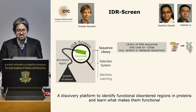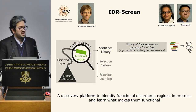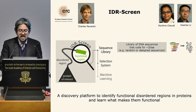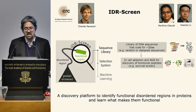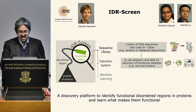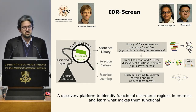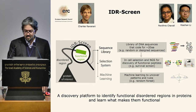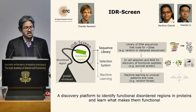After introducing the library to the selection system, we perform next-generation sequencing before and after selection to identify which sequences have the function of interest. We then use machine learning to analyze true positives — sequences with the function — versus true negatives. This identifies patterns and rules in those sequences, which can iteratively validate whether learned patterns are correct. IDR screen permits quantification of protein function of individual library members in a small number of experiments.